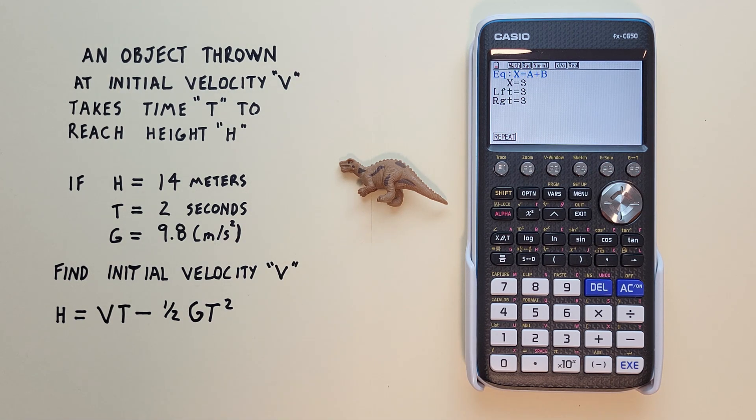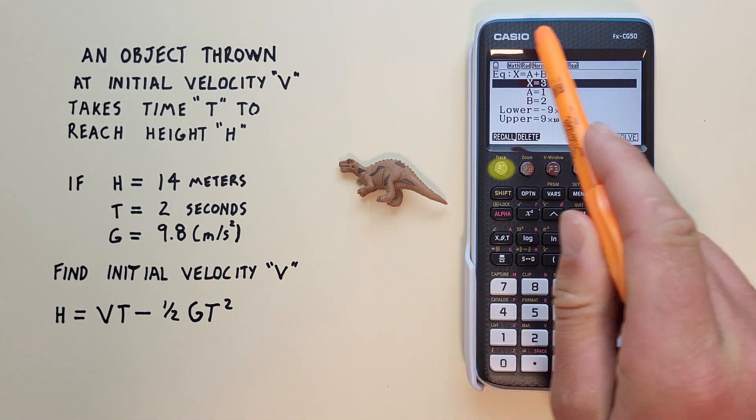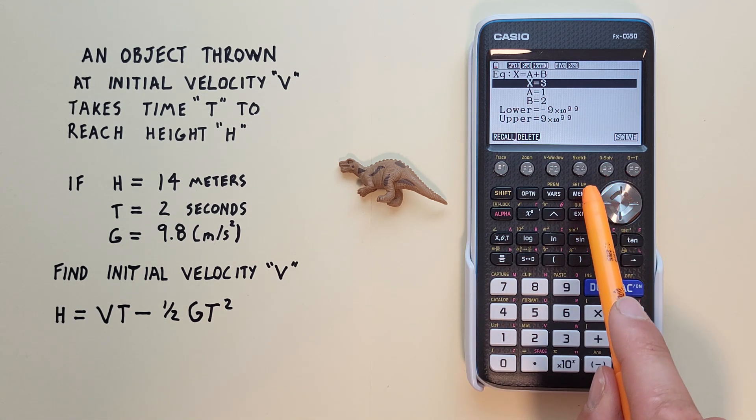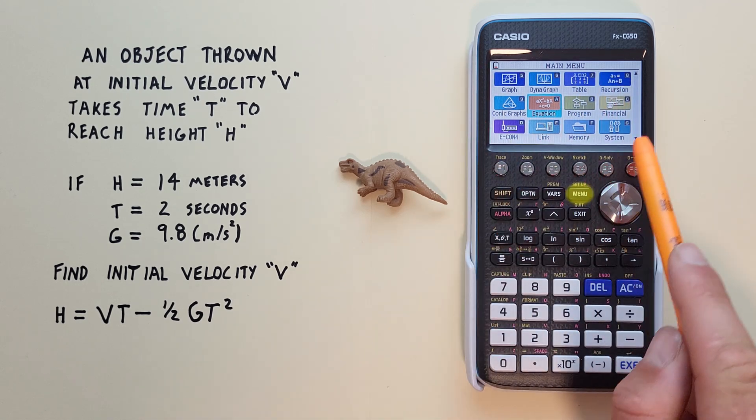And again, when we're done, we can go F1 to go back to our main equation screen. And if we're done working with our equation solver, we can just hit the menu key to go back to the main menu.